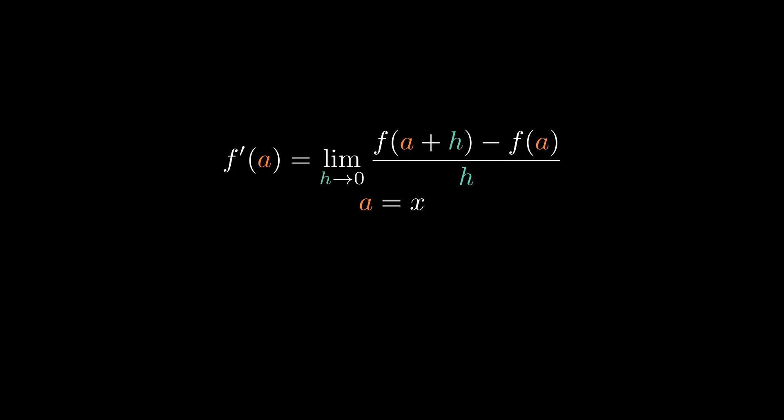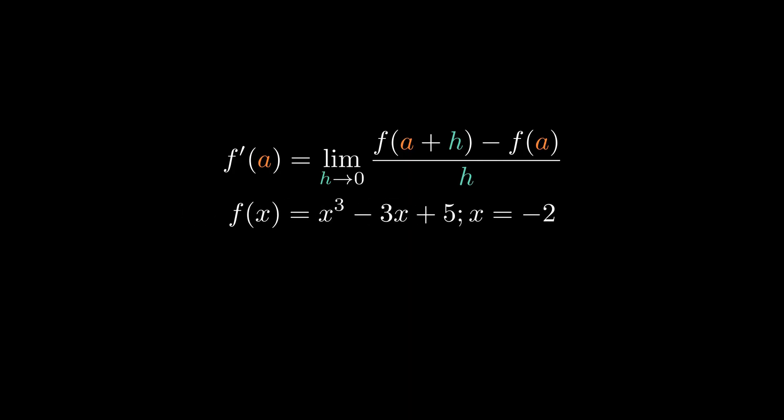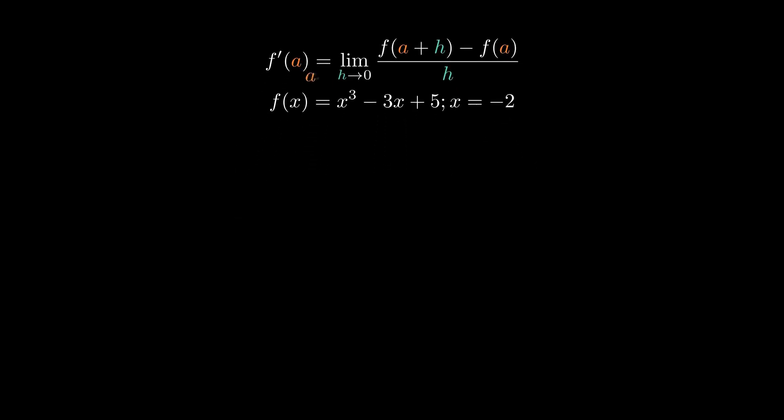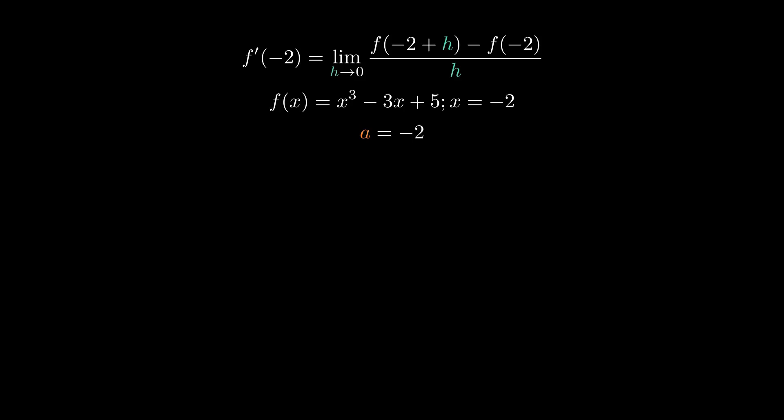We're going to be using the same function from our previous video in this series, where f of x is equal to x cubed minus 3x plus 5. We are going to calculate the derivative at x equal to negative 2. So if x is equal to negative 2, then a is going to be equal to negative 2. So if we plug in negative 2 into a, we're going to be calculating f prime of negative 2, which is equal to the limit as h approaches 0 of f of negative 2 plus h minus f of negative 2 all over h.